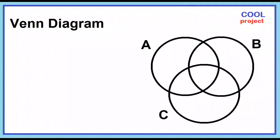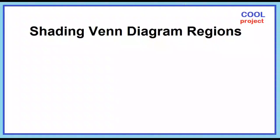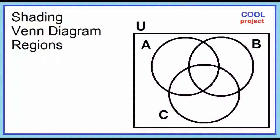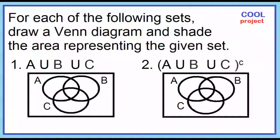Let's study Venn Diagrams with three overlapping sets. Shading Venn Diagram Regions: Let A, B, and C be three sets shown in the Venn Diagram. For each of the following sets, draw a Venn Diagram and shade the area representing the given set.